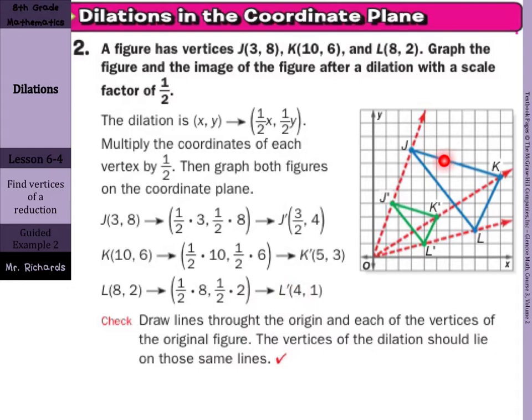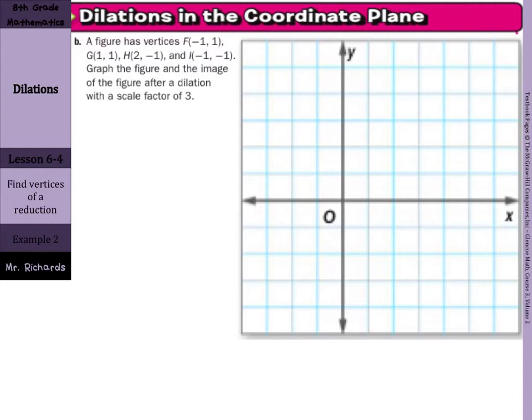A figure has vertices F at (-1, 1), G at (1, 1), H at (2, -1), and I at (-1, -1).